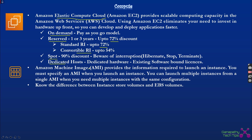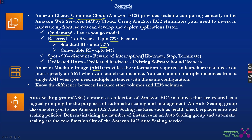Amazon Machine Image (AMI) is an important concept — it provides the information required to launch an EC2 instance. You must specify an AMI when launching an instance, and you can launch multiple instances from a single AMI. If you need multiple instances with the same configuration, you deploy your applications, take a golden copy AMI, and use it to deploy the same configuration across various zones and regions. Simply put, an AMI is a backup or snapshot of an existing EC2 instance.